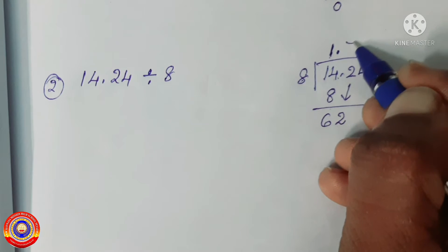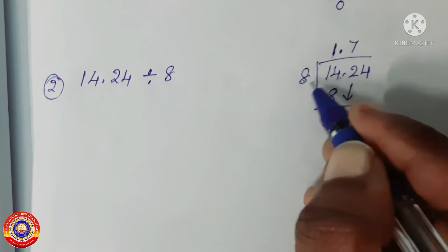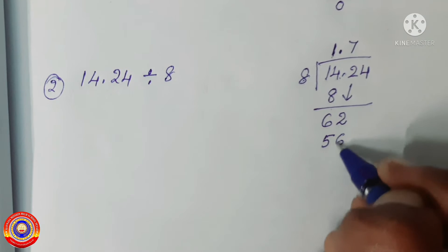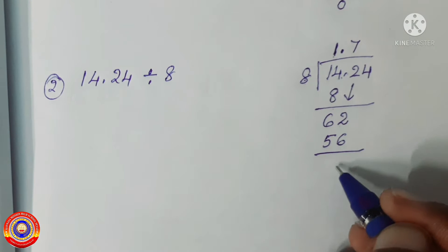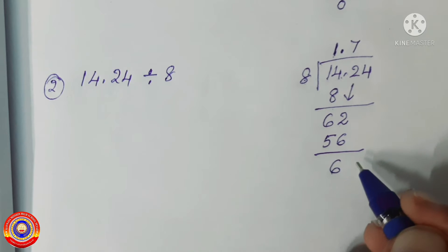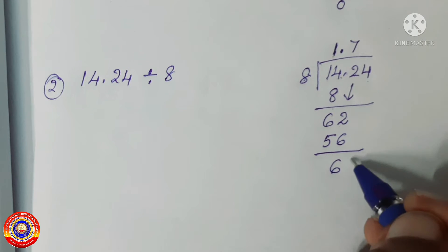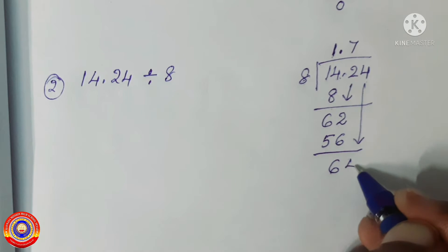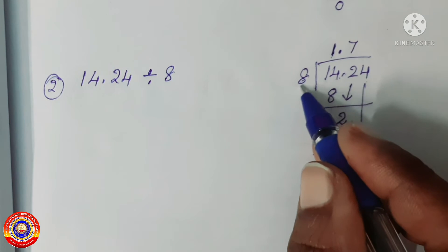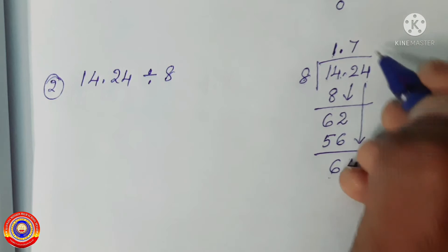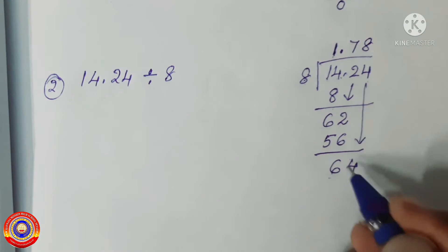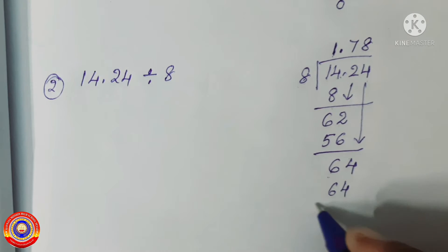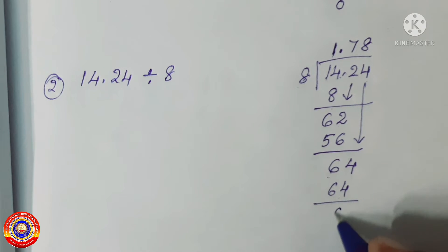Yes, it is 7 times. Then 8 into 7 is equal to 56. Next, 62 minus 56 is equal to 6. Then bring down the number 4 in the hundredth place — 6 will become 64. Then 64 divided by 8 is equal to 8. 8 multiplied by 8 is equal to 64, and 64 minus 64 is equal to 0.